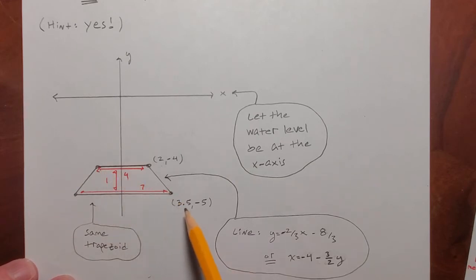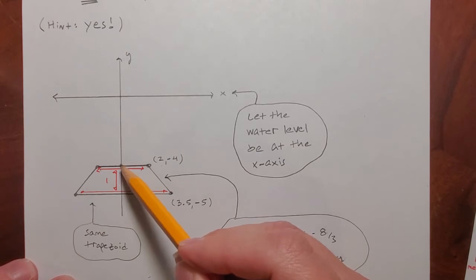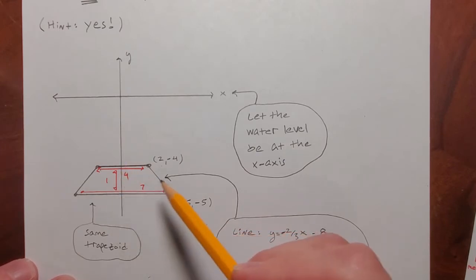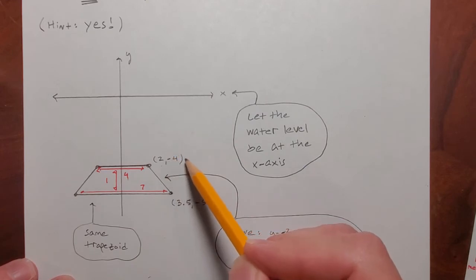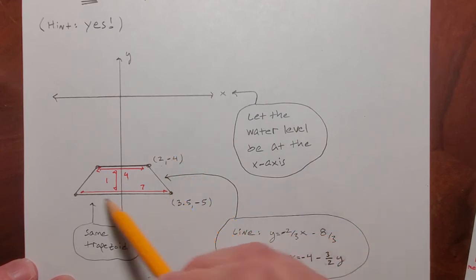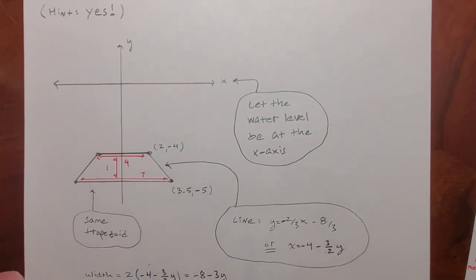And that makes this one at 3.5, and this one would be at negative 3.5. Also, it was given that the height of this shape was 1. And so if the y-coordinate here was negative 4, that means down at either this point or this point, it would be negative 5. Okay. All right. So I can do that.